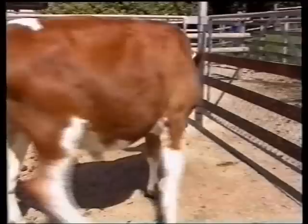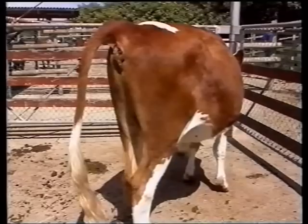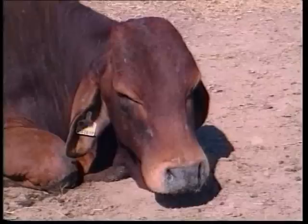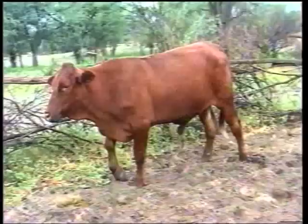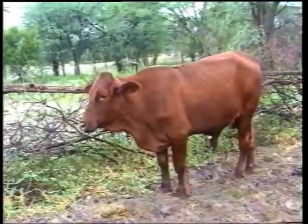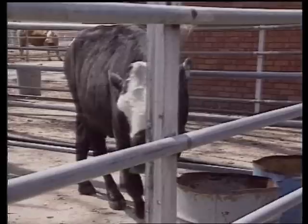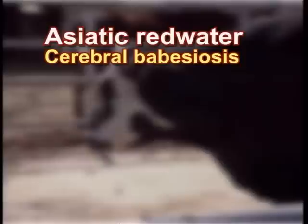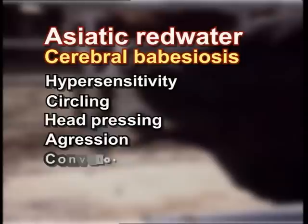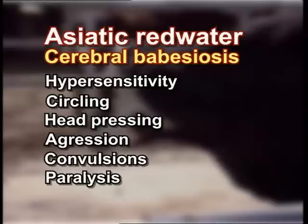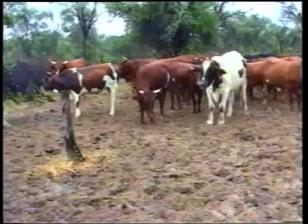Anaemia, and less commonly icterus, develop and are especially obvious in more protracted cases. Diarrhoea is common in Asiatic redwater and pregnant cattle may abort. Affected animals may die from one to several days after the onset of clinical signs. Animals with Asiatic redwater are generally more severely affected than those with African redwater, and also take much longer to recover fully. Some animals with Asiatic redwater develop cerebral babesiosis, which is characterised by the development of nervous signs such as hypersensitivity, circling, head pressing, aggression, convulsions and paralysis. The course of the disease in these cases is usually short and the outcome is almost always fatal. Signs of cerebral or brain involvement are not seen in African redwater.